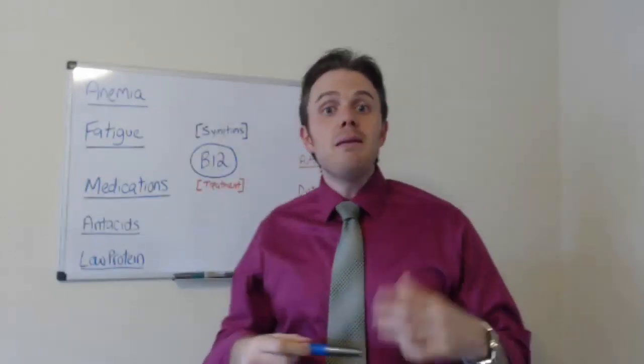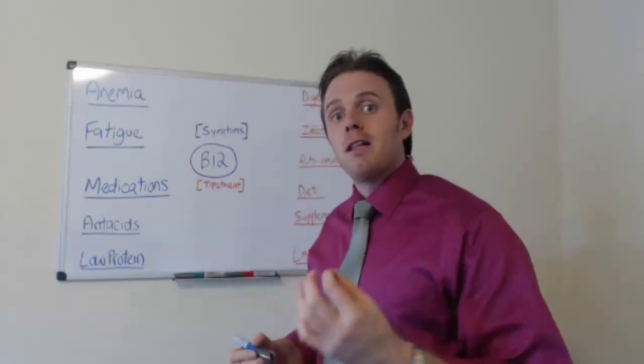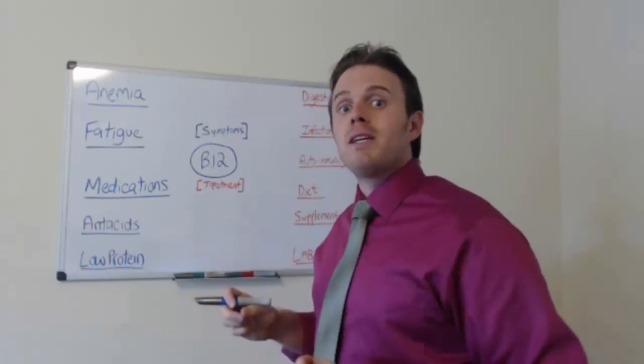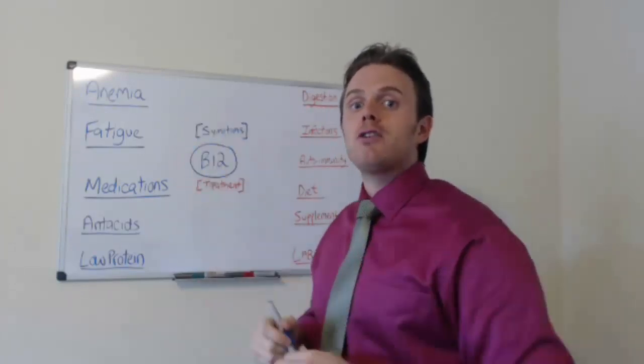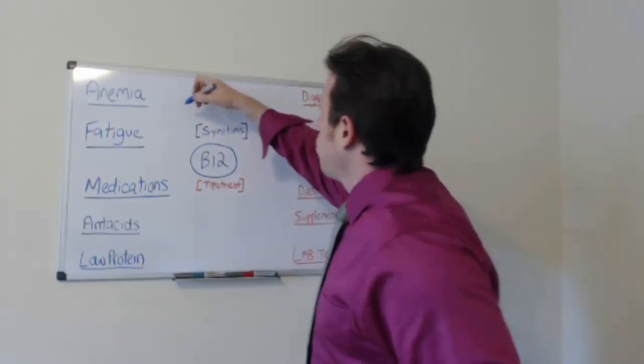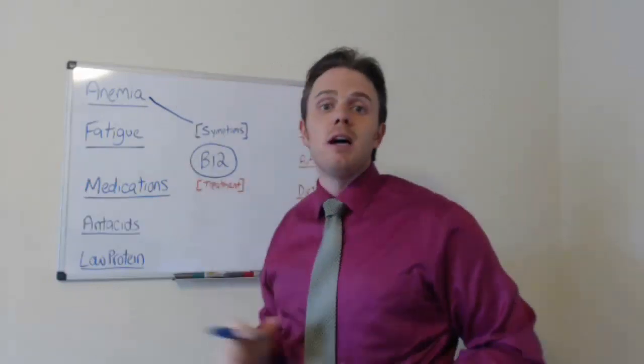So one of the first things we see with a B12 anemia, maybe like a megaloblastic anemia. The reason why that term is megalo is because the red blood cell's extra big, it's not fully mature. So one of the main symptoms we're going to see in B12 is an anemia.